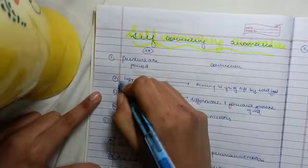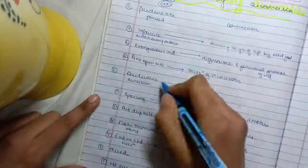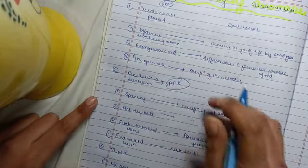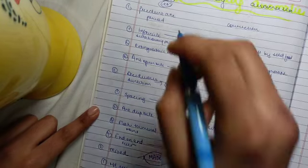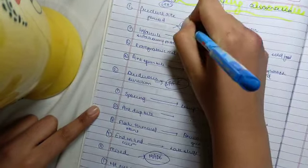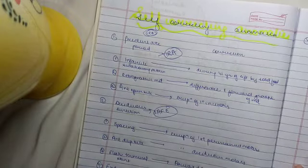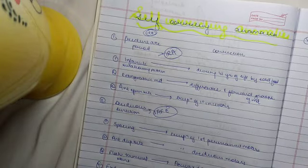So, this completes the self-correcting anomalies. To remember the pre-dentate, remember IRA. To remember the deciduous, remember SAFE. And for mixed, you can remember MADE. I hope I made it easier for you to understand. Thanks. If you liked the video, do subscribe to my channel. Thank you.